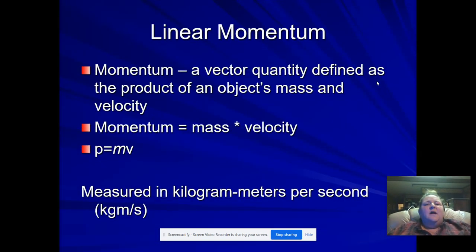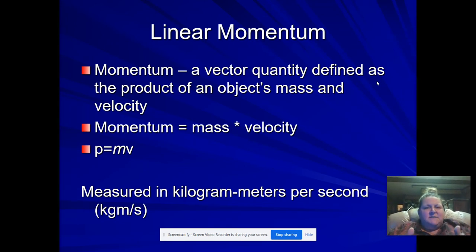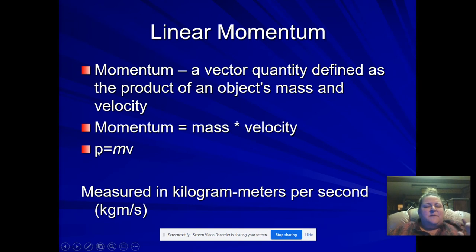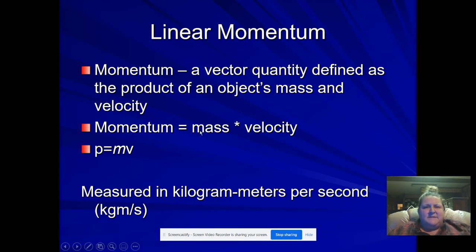Momentum is a vector quantity defined as the product of the object's mass times its velocity — how fast it's moving. So momentum is mass times velocity. Little p stands for momentum — why little p, I don't know, but let's go with it. It's measured in kilograms times meters per second, so your mass must be in kilograms and your velocity must be in meters per second.